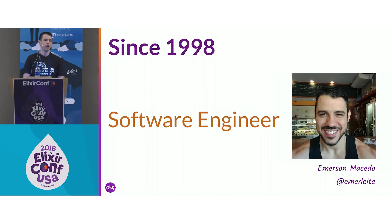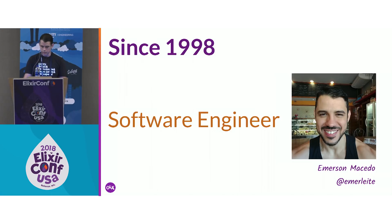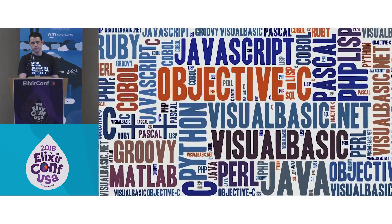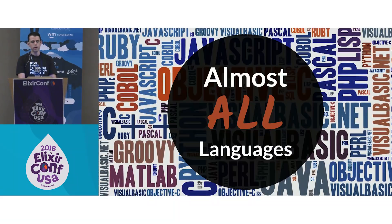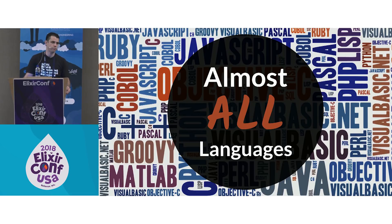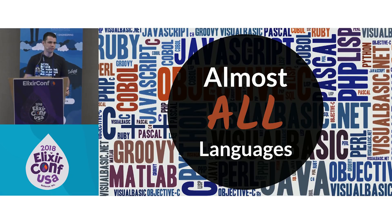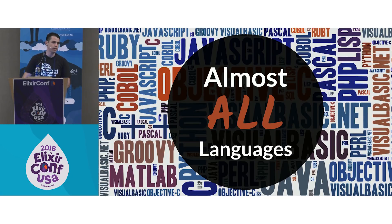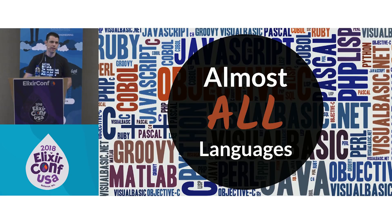My name is Emerson. I work as a software engineer since 1998, and I have been working with almost all languages you can imagine — from COBOL to Java, C#, ASP, PHP, ColdFusion, Ruby, Python. And now I'm working with Elixir.